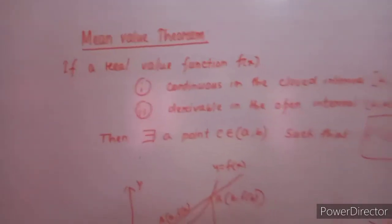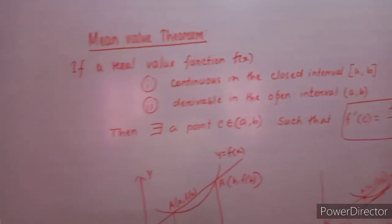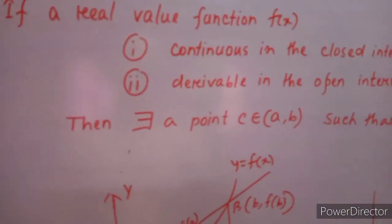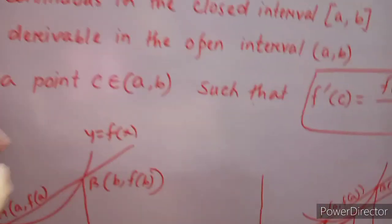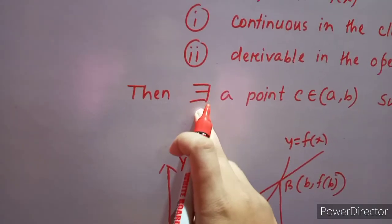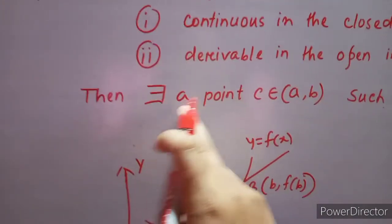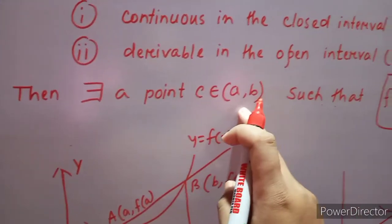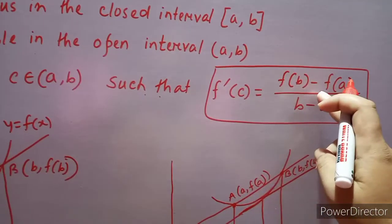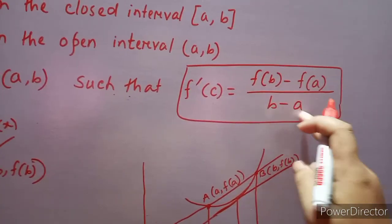Now we will discuss the Mean Value Theorem. The Mean Value Theorem says if a real-valued function f(x) is continuous in the closed interval [a, b] and derivable in the open interval (a, b), then there exists a point C belonging to the open interval (a, b) such that f'(c) equals f(b) minus f(a) divided by b minus a.